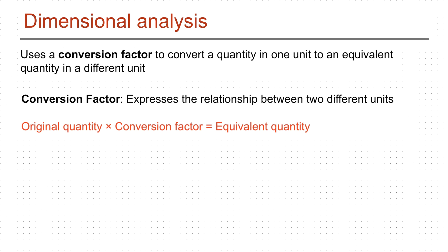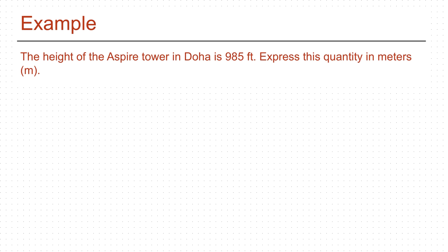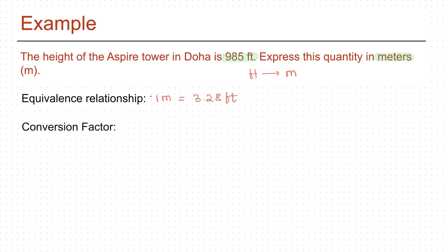To understand how a conversion factor works, let us do an example problem. The height of Aspire Tower in Doha is 985 feet — express this quantity in meters. To convert the height from feet to meters, we need to know the equivalence relationship between meters and feet. This relationship will be provided to you. In this case, the equivalence relationship is 1 meter equals 3.28 feet. From this, we can write two conversion factors, both equal to 1: 1 meter per 3.28 feet, or 3.28 feet per 1 meter.